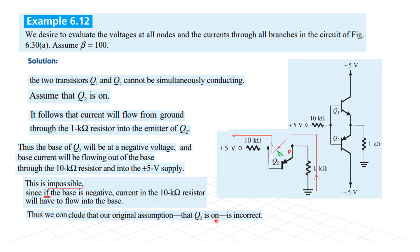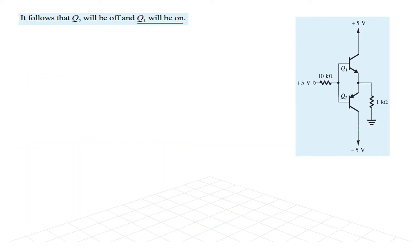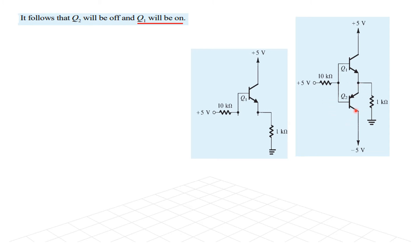The assumption that Q2 is on is incorrect. That means we can safely say that Q1 will be on, because one of the two has to be on. With this conclusion it follows that Q2 will be off and Q1 will be on. We can now draw this circuit separating the Q2 terms. We have removed Q2 because it is off, so this is what is left.